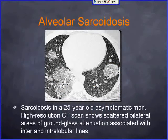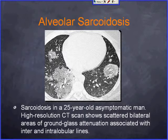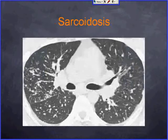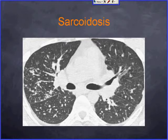Alveolar sarcoidosis is a subtype of sarcoidosis in terms of radiographic appearance. In a 25-year-old asymptomatic patient, high-resolution CT shows bilateral ground glass opacity with interlobular and intralobular lines. This is certainly not the typical presentation; the most typical sarcoidosis appearance is peribronchiovascular nodules, which when seen allows you to confidently call sarcoidosis.